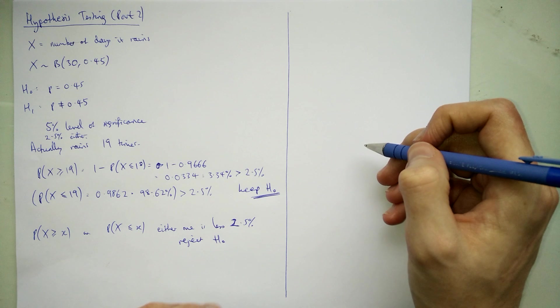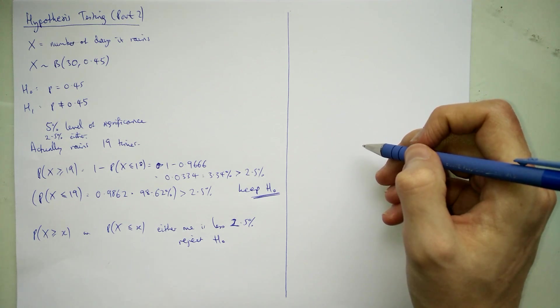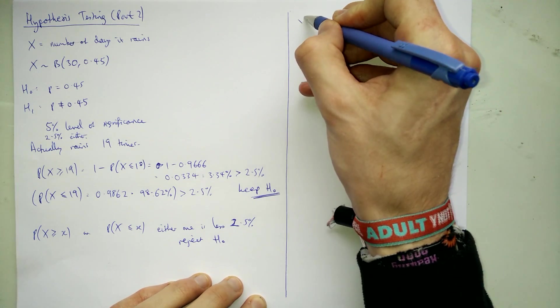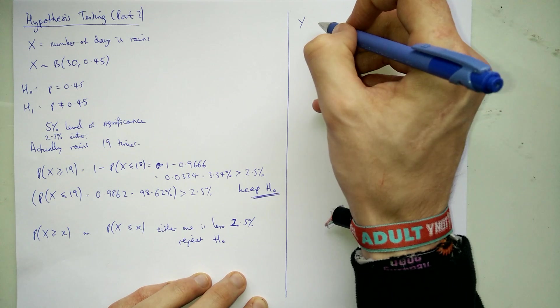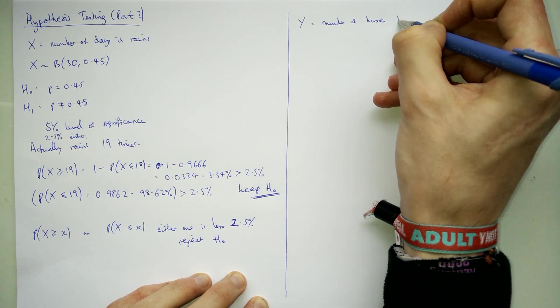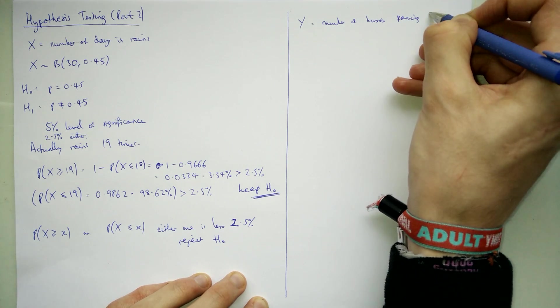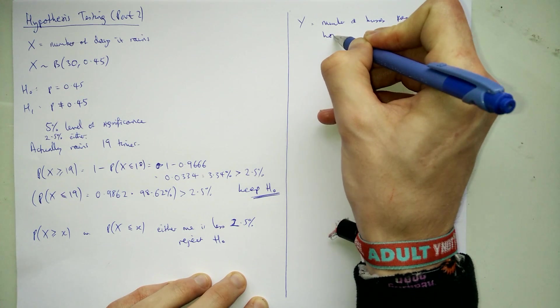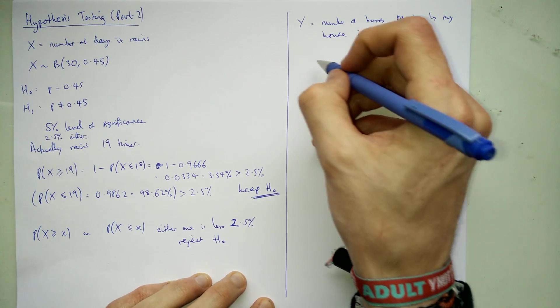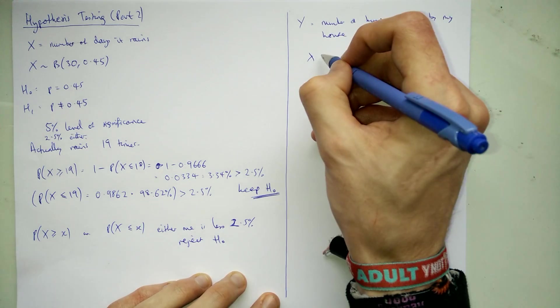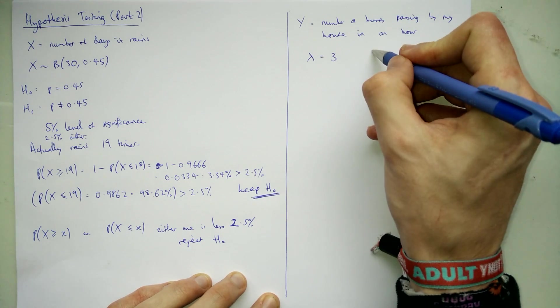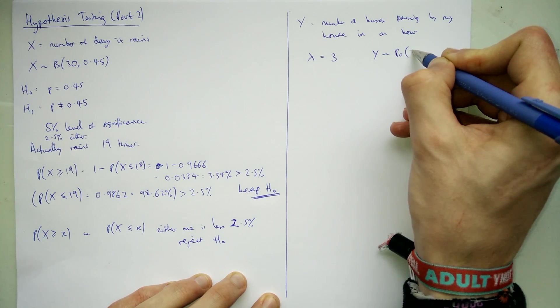The last thing I'll do on here is a Poisson one because it's perfectly possible to do this for Poisson distributions as well. I'm sitting in my window in my room and I'm looking at the number of buses going past in the hour. So let's have Y equals number of buses passing by my house in an hour. Now, what are our main bus routes? So the number of buses that can pass per hour normally is about 3, 3 per hour. So we can say that Y is Poisson distributed at 3.